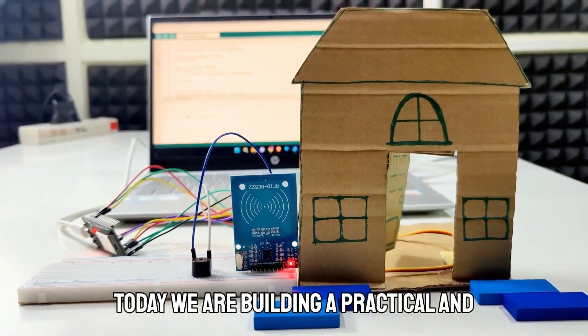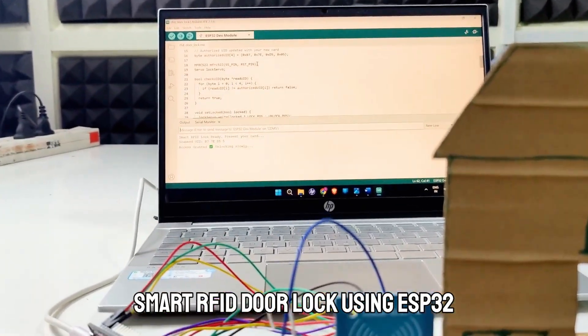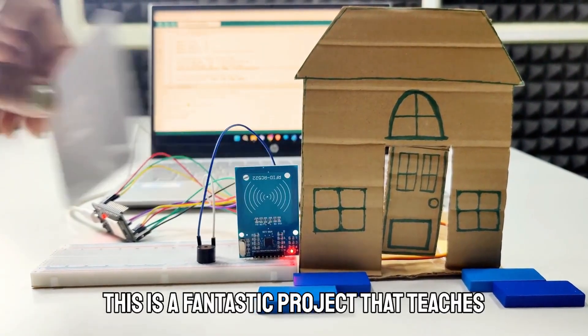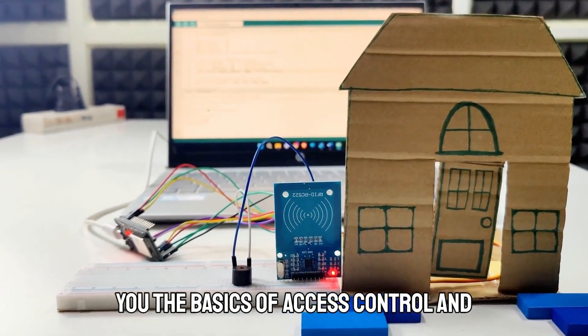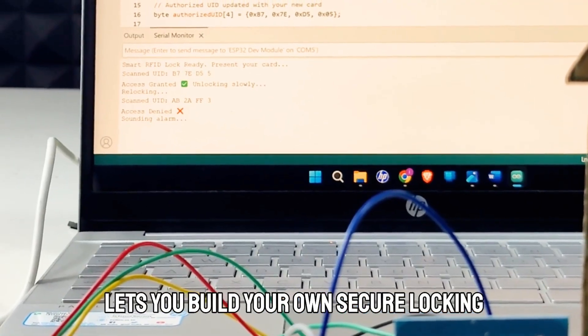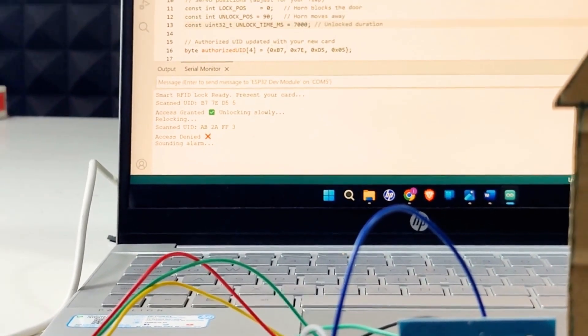Today we are building a practical and smart RFID door lock using ESP32. This is a fantastic project that teaches you the basics of access control and lets you build your own secure locking system.